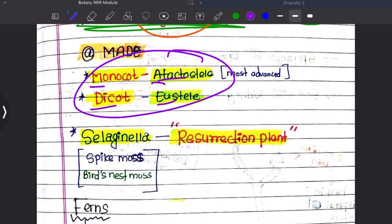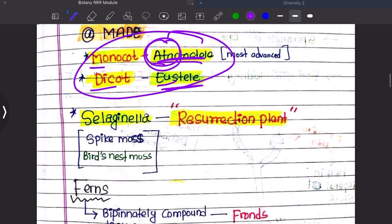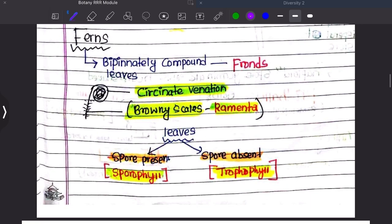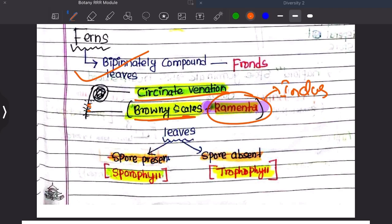This is a monoecious. It can be advanced. It has bipennately compound leaves. This is ramenta. This is very important. Ramenta or indumentum. It is important.